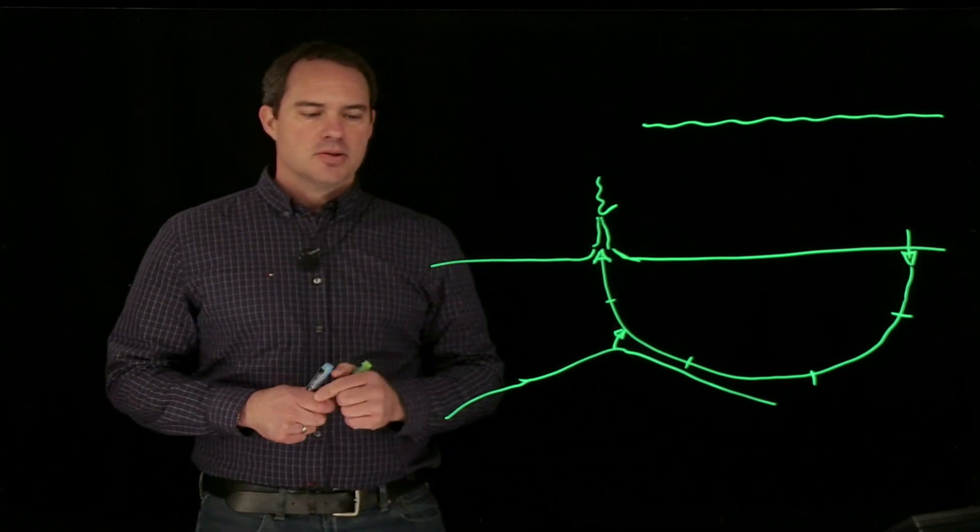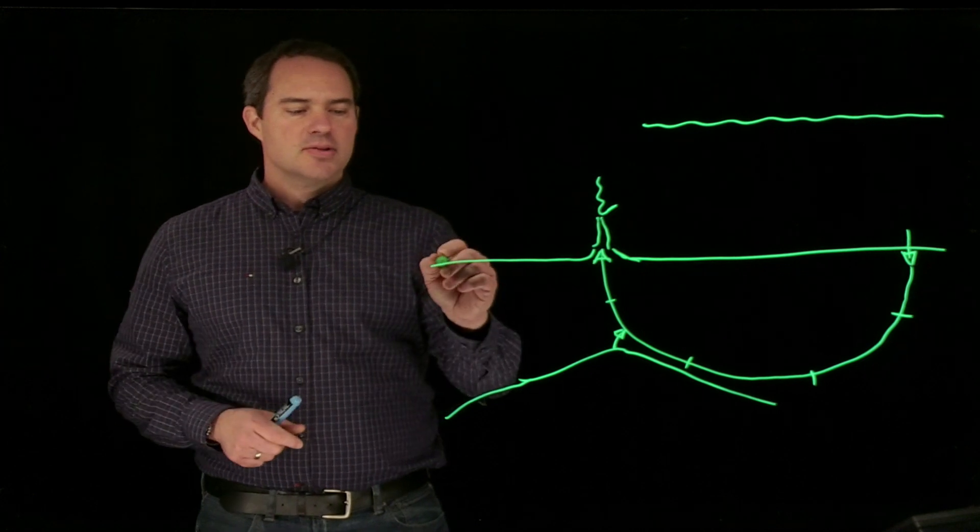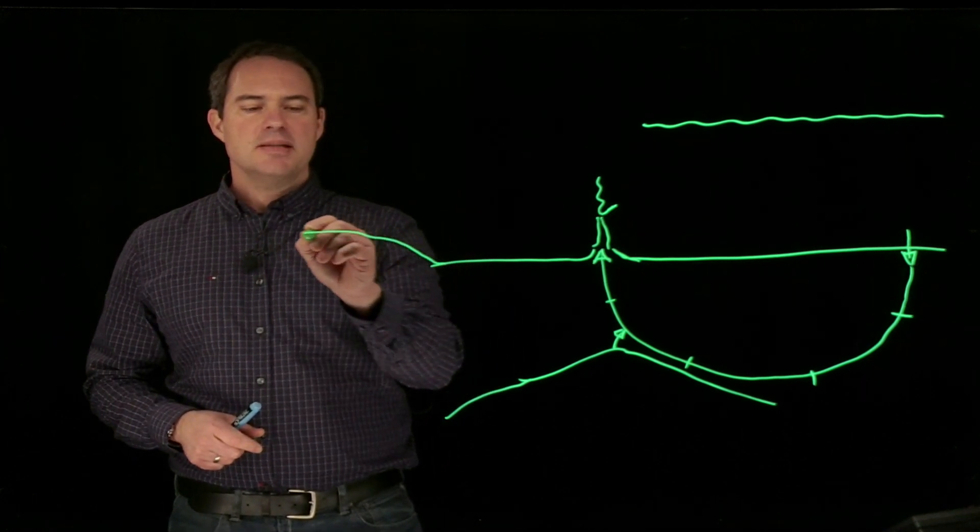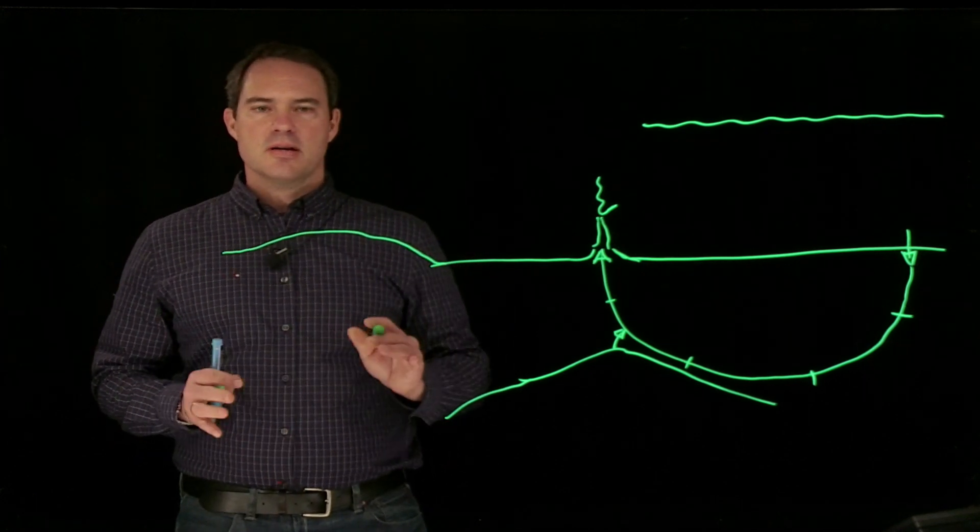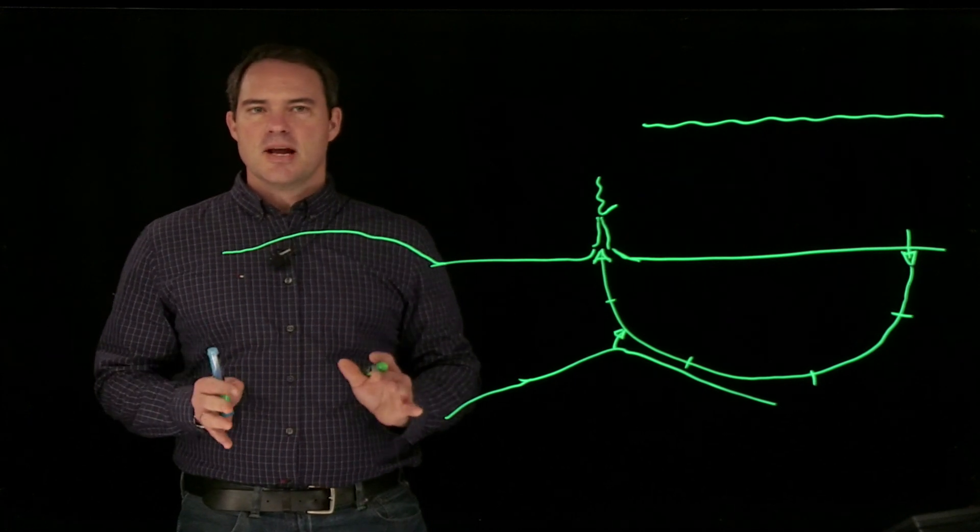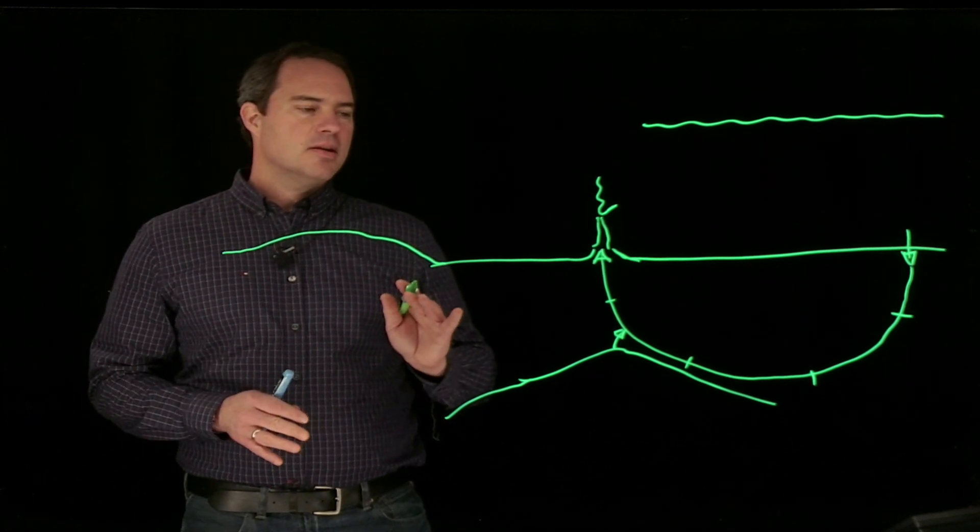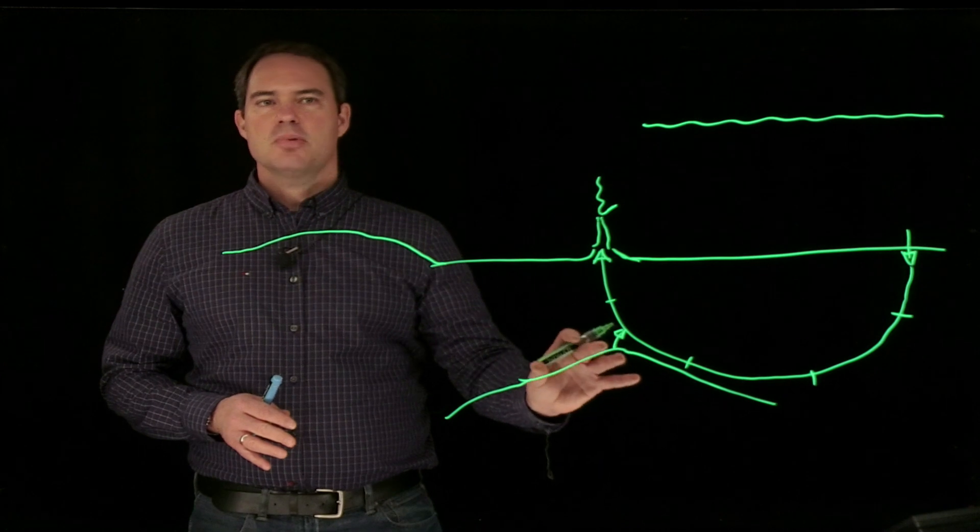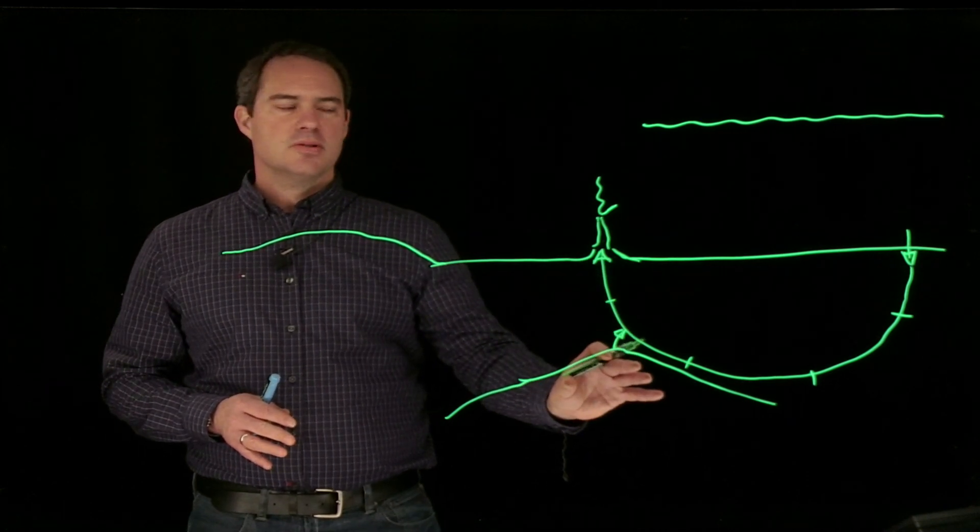Off-axis from the mid-ocean spreading ridge are other systems—these serpentinizing systems that I was talking about. This is a completely different type of system because there's no magma chamber associated with that, so there's no volatile inputs.